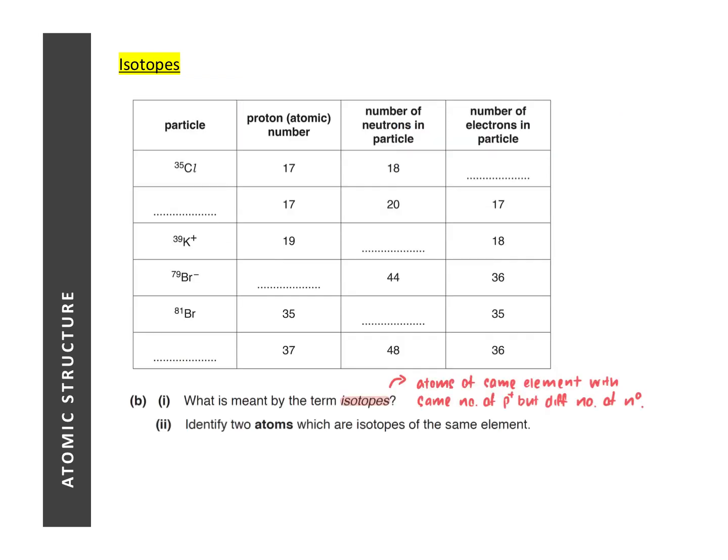This question is very similar to the one before. We are supposed to find the number of protons, neutrons, and electrons. And once again, you need to be very careful of the ions in the list of particles. When we look at ions, the number of protons and electrons are not going to be the same. Essentially this question is there because I want to go through the concept of isotopes. But let us complete the table first before we go on to a discussion of isotopes.